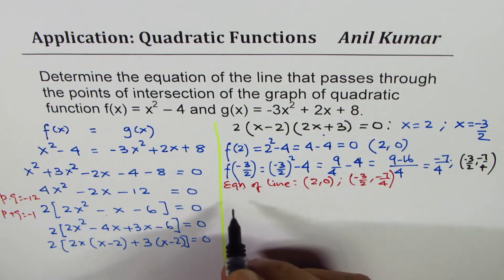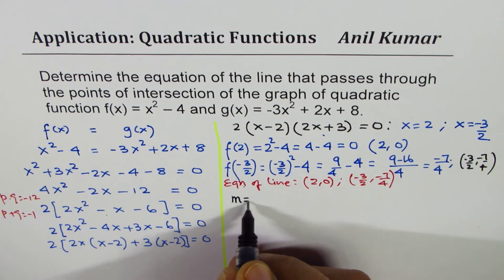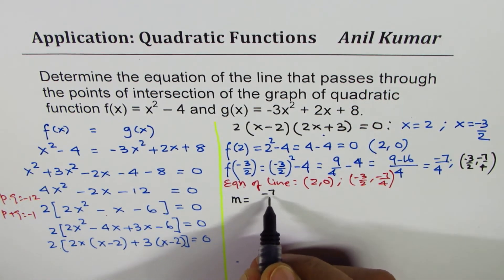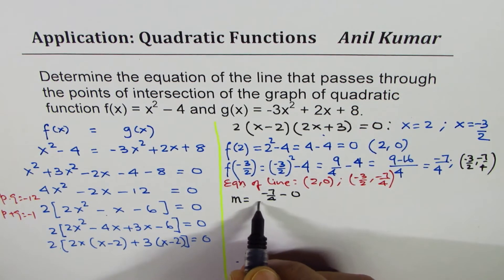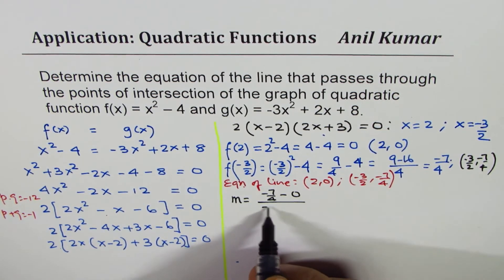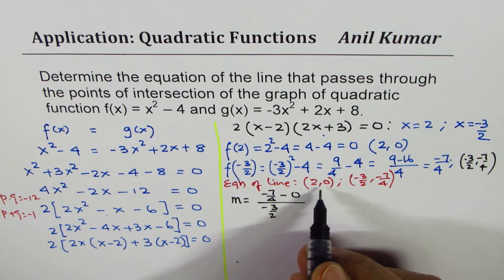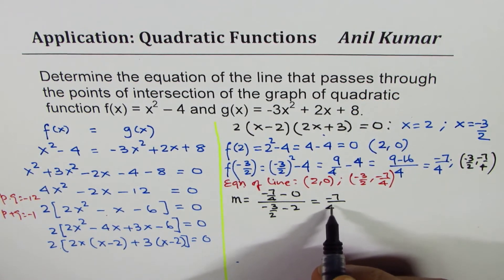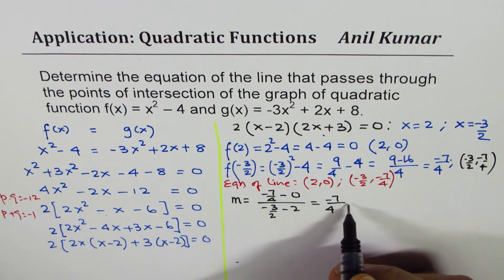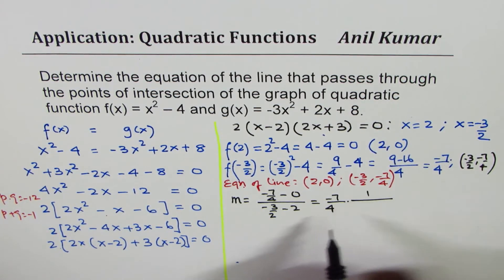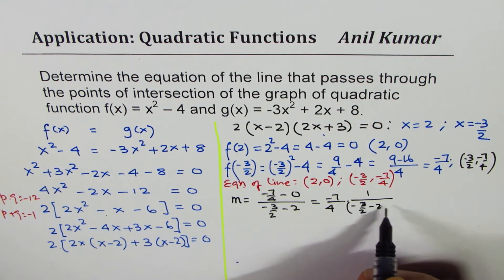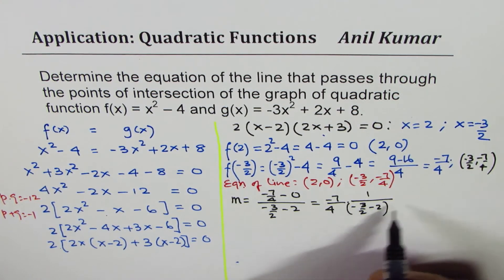To find the equation of the line, let's find slope first. M = (y₂ - y₁)/(x₂ - x₁), so that's (-7/4 - 0) / (-3/2 - 2). That is -7/4 times 1/(-3/2 - 2).